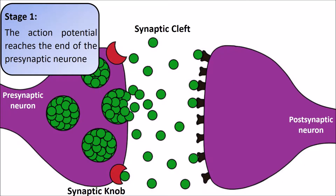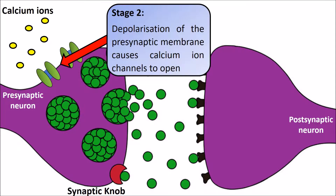We start with an action potential travelling down the presynaptic neuron and reaching the synaptic knob at its end. This causes a depolarization in the presynaptic membrane, which causes calcium ion channels to open.